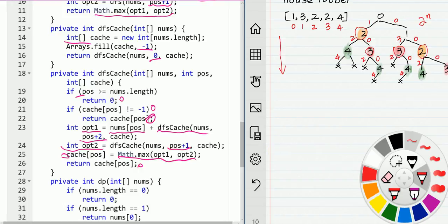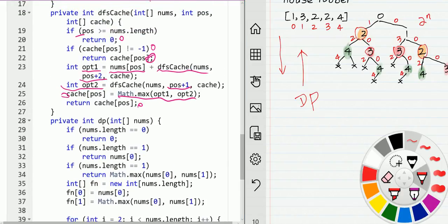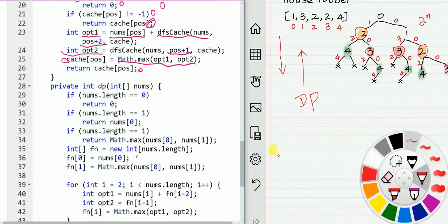...DFS with memoization. Almost every such solution can be converted to bottom-up dynamic programming solution. Here is our dynamic programming solution. We just convert the termination condition, termination status of DFS, into the initialized status of dynamic programming.